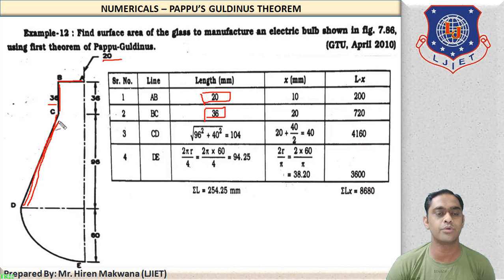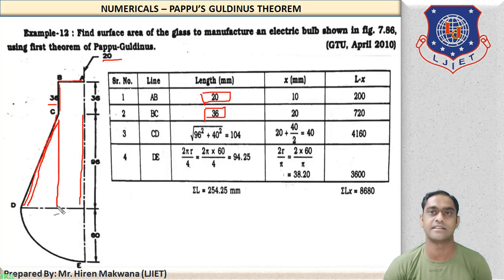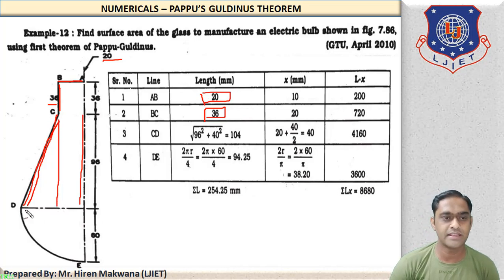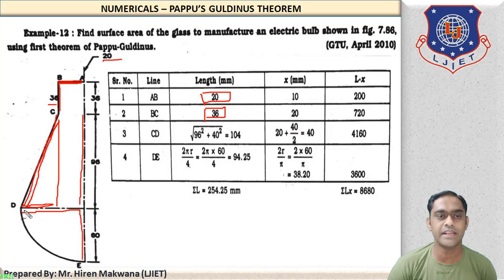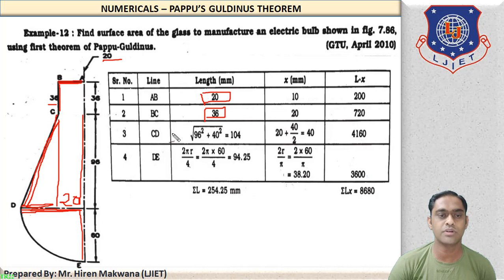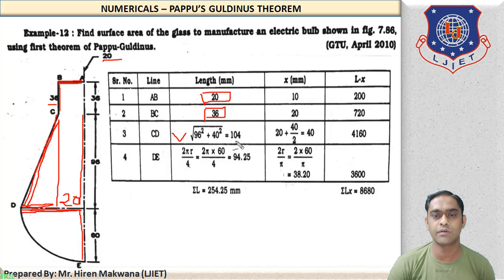Length CD is not directly given. The vertical distance is 96 mm, and the base can be found since the radius is 60 mm and the horizontal AB length is 20 mm. So the base of the triangle = 60 − 20 = 40 mm. By Pythagoras theorem: CD = √(96² + 40²) = 104 mm.